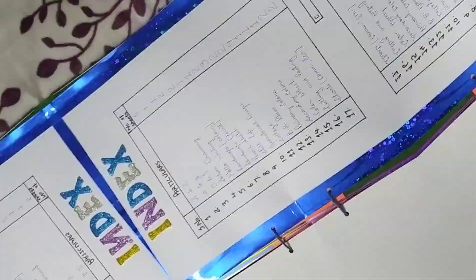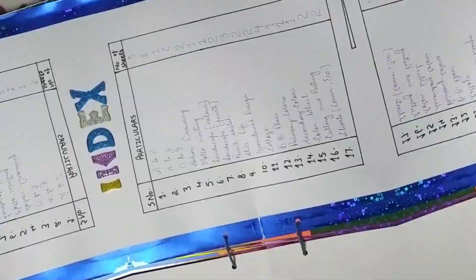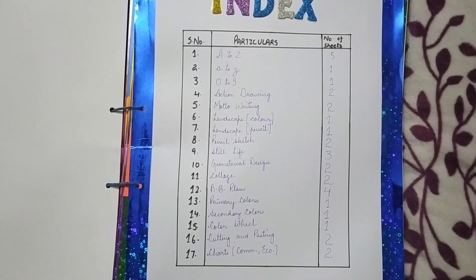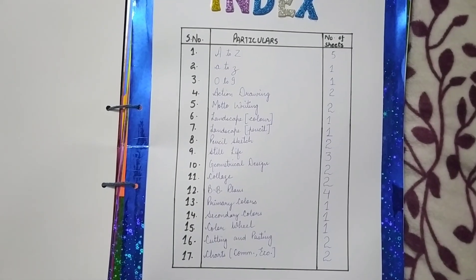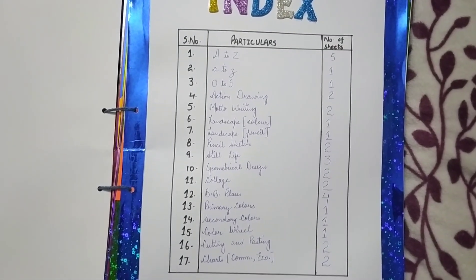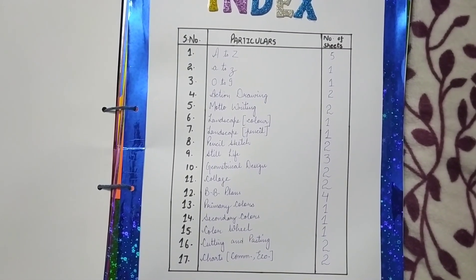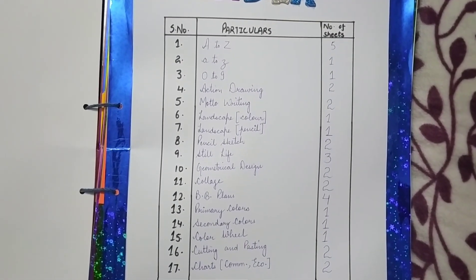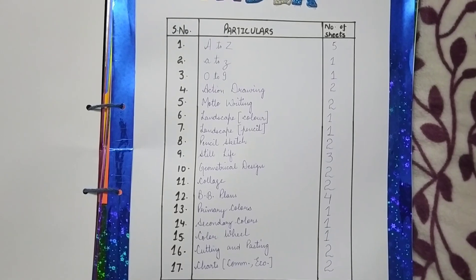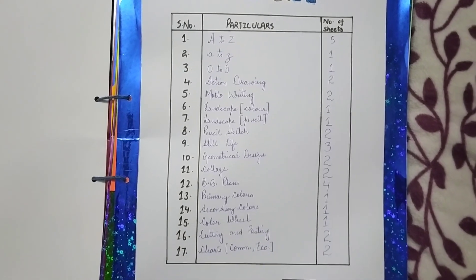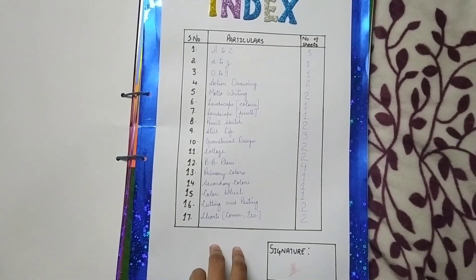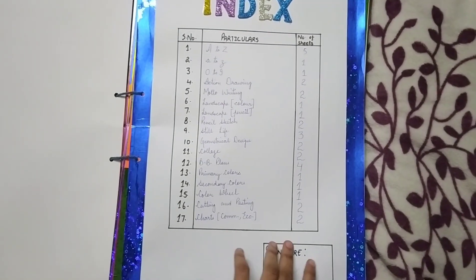This is the index of this file. It shows 17 different elements of which I have made the sheets. One by one I will be showing you the elements of this file.